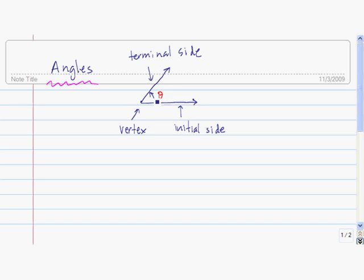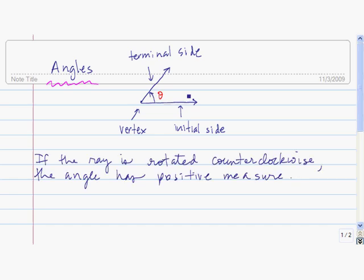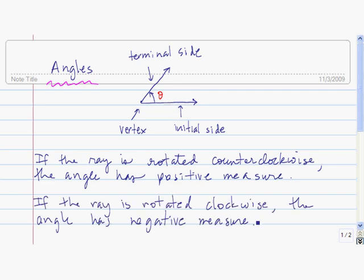If the angle is formed by rotating the ray in the counterclockwise direction, the angle is said to have positive measure. If instead the angle is formed by rotating the ray clockwise, then the angle is said to have negative measure.